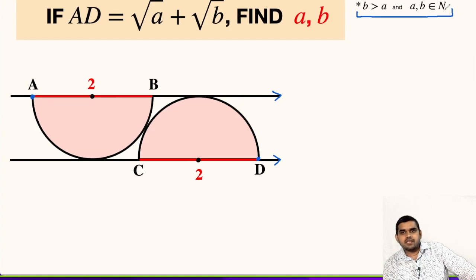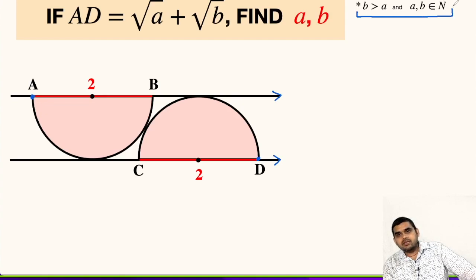A and B are from the set of natural numbers. The constraint on A and B is that they cannot be 0, because 0 does not belong to the set of natural numbers. They cannot be negative and they cannot be decimals. So the minimum value of A or B can be 1, then 2, 3, 4, and so on.